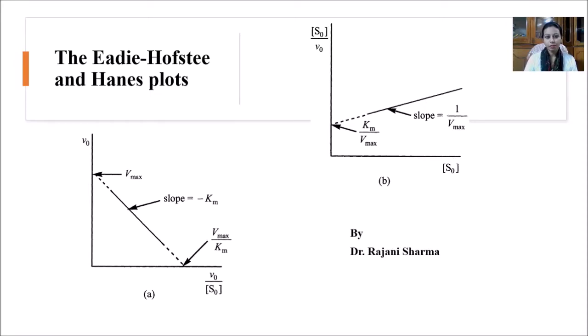Hello everyone and welcome back to my channel Be Yourself. This is Dr. Rajni Sharma and today I will discuss the Eadie-Hofstee and Hanes plot. In previous classes of enzymology we have seen that Michaelis-Menten equation was also not able to calculate the V max properly.